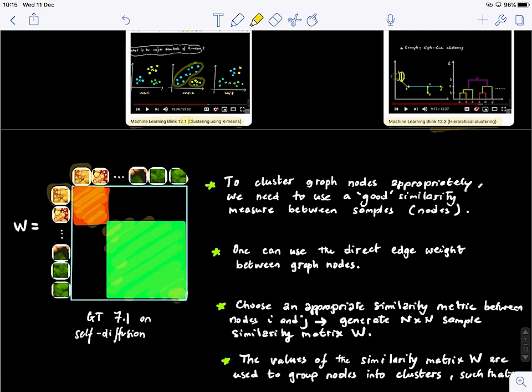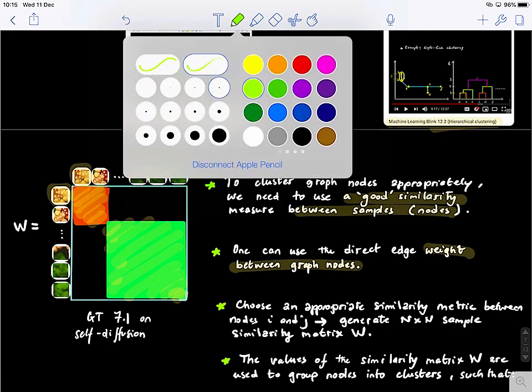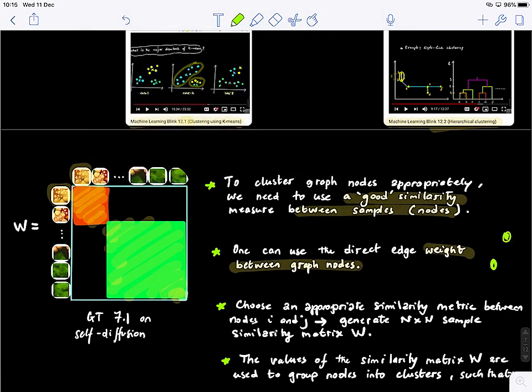To cluster graph nodes appropriately, the first thing we need to think about is how to define the similarity or a good similarity between samples or between nodes. One intuitive or direct way is to use just the weight between graph nodes. So if you have two nodes, you can just use this weight between them to do the clustering.